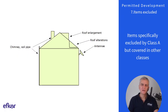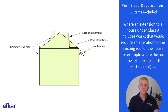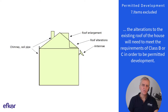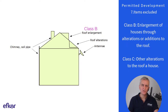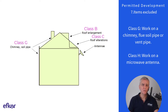Condition seven: items specifically excluded by class A but covered in other classes. Where an extension to a house under class A includes works that would require an alteration to the existing roof of the house — for example where the roof of the extension joins the existing roof — the alterations to the existing roof will need to meet the requirements of class B or C in order to be permitted development. Class B covers enlargement of houses through alterations or additions to the roof. Class C covers other alterations to the roof of a house. Class G covers work on a chimney, flue, soil pipe or vent pipe, and class H covers work on a microwave antenna.